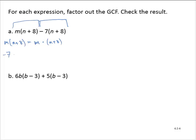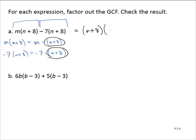Negative 7 times n plus 8 is equal to negative 7 times the quantity n plus 8. Notice that there is a common factor of n plus 8. So I can factor out that common factor — we usually write it first — giving us n plus 8 times the quantity m minus 7. And that's the factored form.